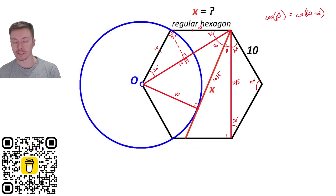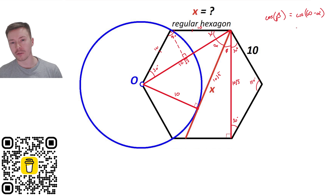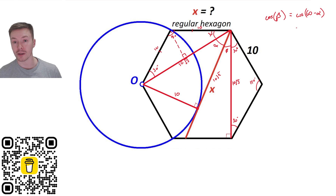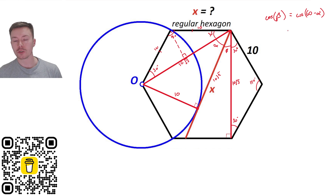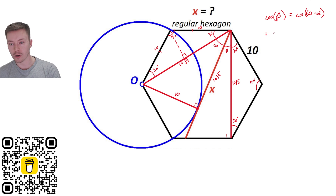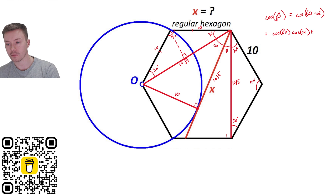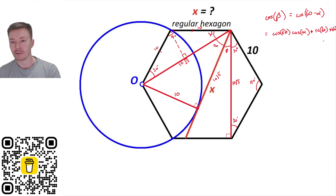This is where A-level mathematics comes in — or further maths. Using the cosine subtraction formula: cos(60 − alpha) = cos 60 · cos alpha + sin 60 · sin alpha. This allows us to rewrite cos beta in terms of known values rather than getting a decimal approximation.